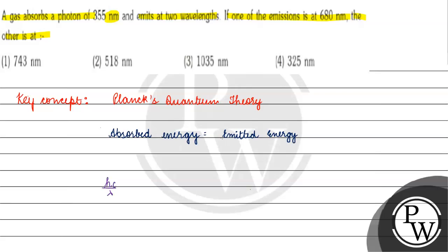Absorbed energy equals hc/λ, where λ is given as 355 nanometers. For the emitted energy, we have two wavelengths: hc/λ₁ which is 680 nanometers, plus hc/λ₂.